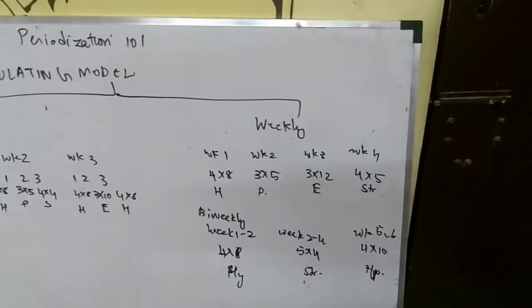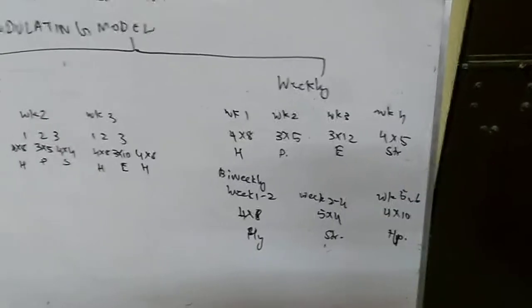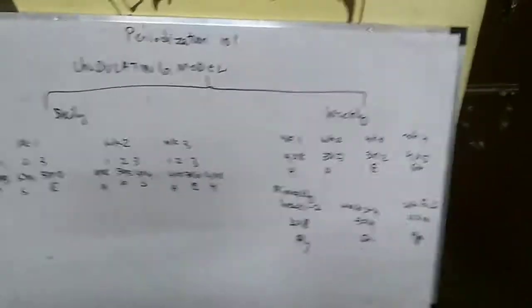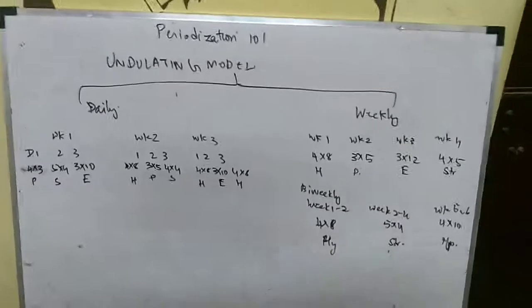And finally, week 4, 4 by 5 for strength. Bi-weekly, as the name indicates, you are doing the same weekly progression, but for 2 weeks. It's as simple as that. Don't complicate the periodization model. These are just principles you need to apply based on the client's needs.